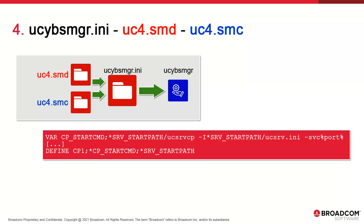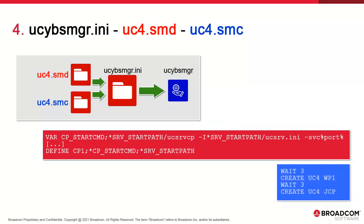If you want to start two CPs automatically, you should have a define cp1 and define cp2, and use the start cmd and start path variables. This works for every service — agents, AWI, even the database. Each time, the syntax varies a bit but operates along the same principles.